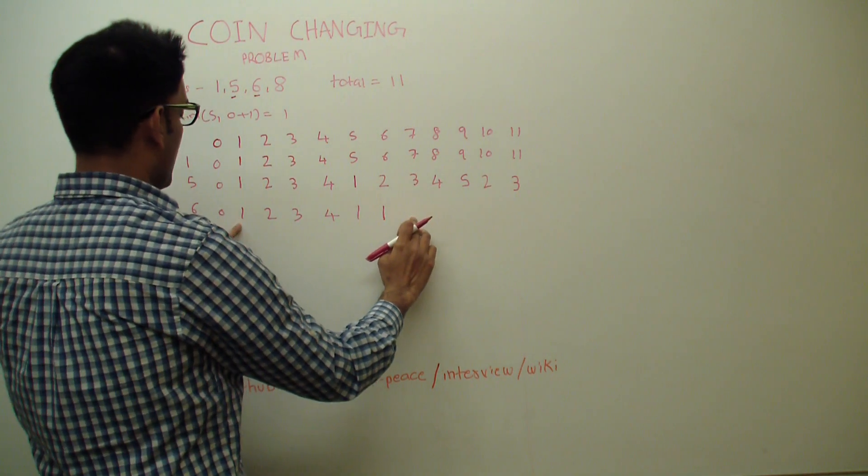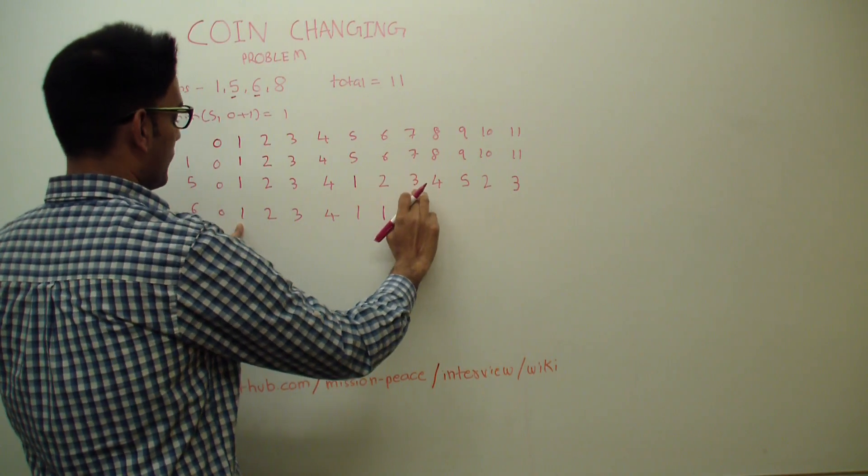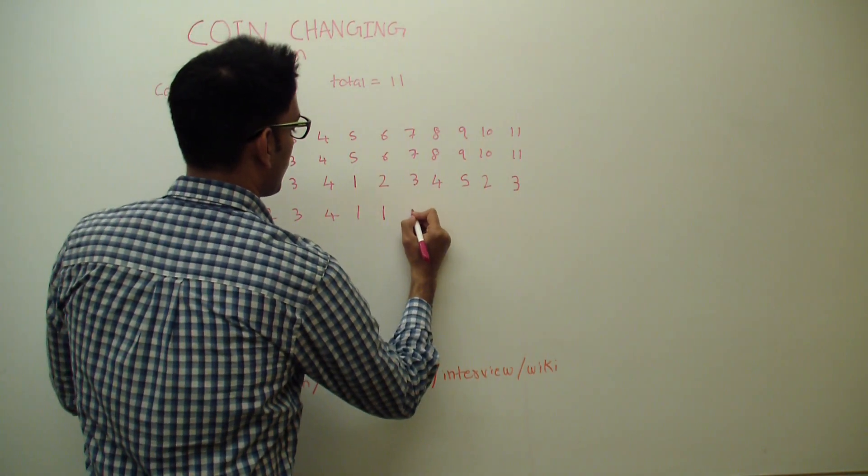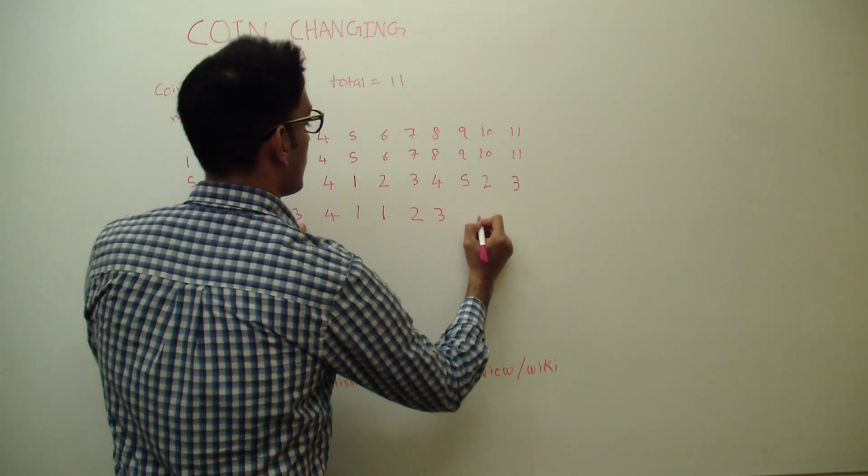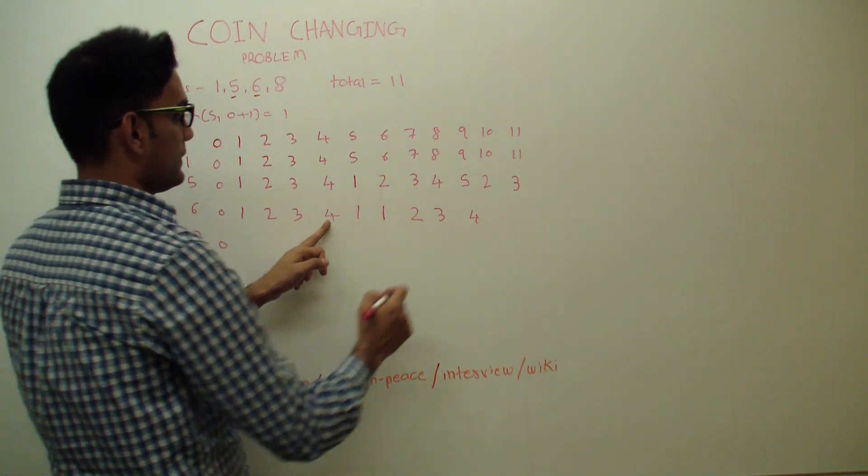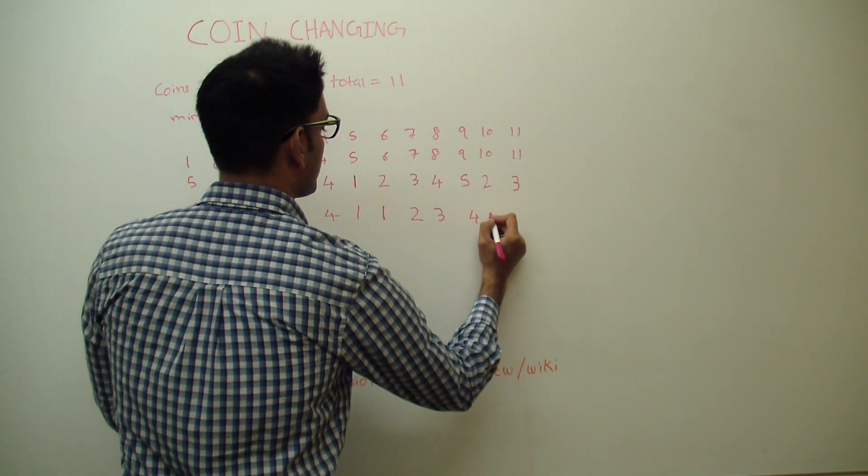To get 7, we'll go back 6 here. So either 3 or 1 plus 1, 2, so 2. So 3, 4. So instead of doing this, we'll pick a value from the top, 2.